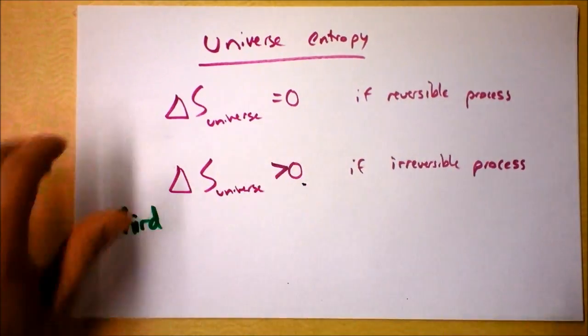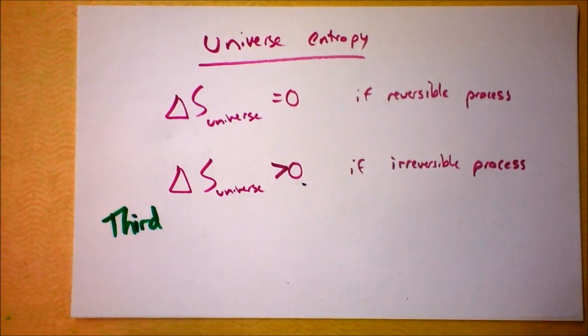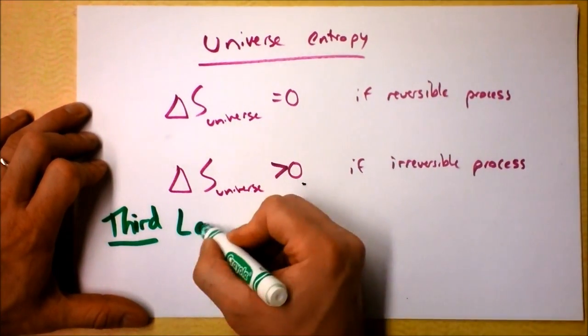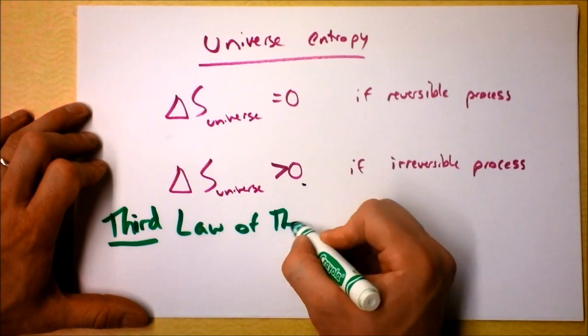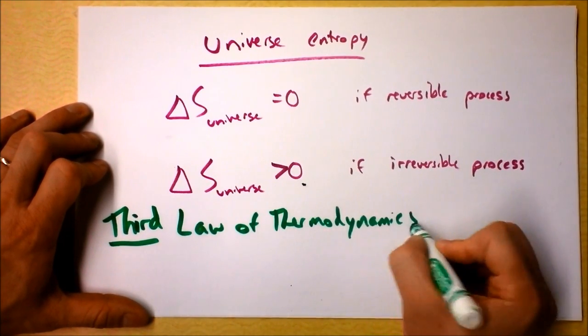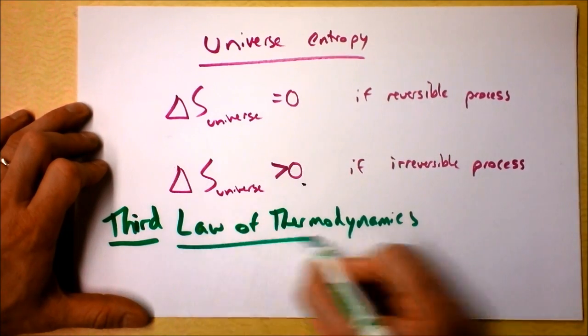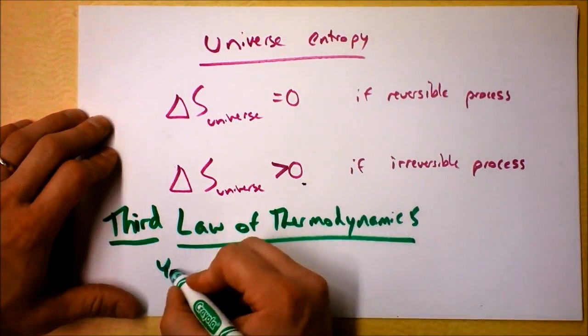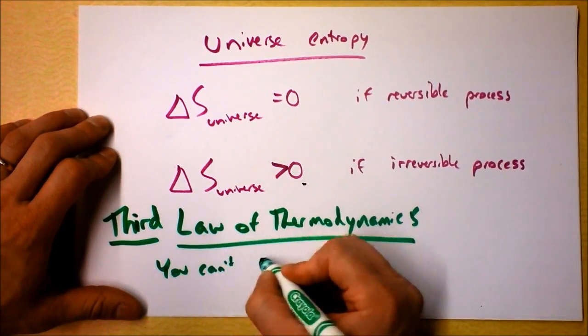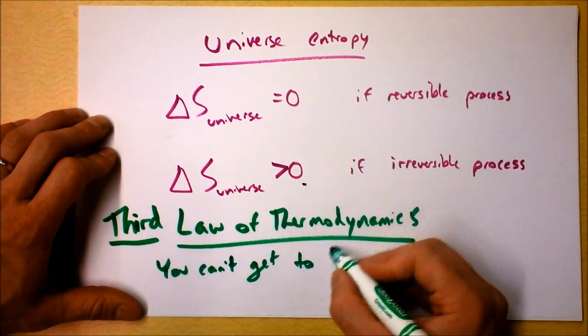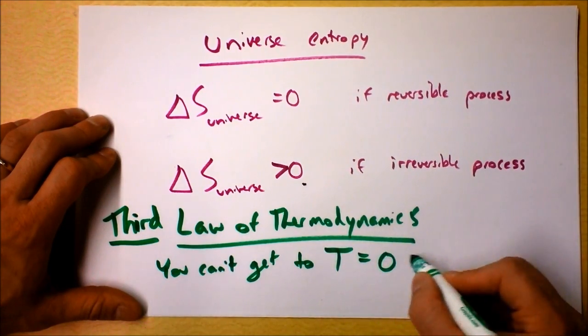There is much, much more to know about entropy, but I'm not the guy to teach it, and this isn't the place to learn it. Find somebody who knows more about it. Third law of thermodynamics. There we go. The third law of thermodynamics says you can't get to zero.